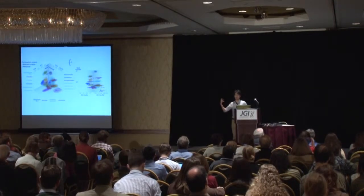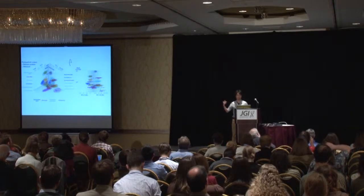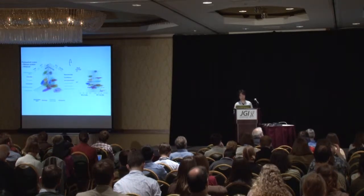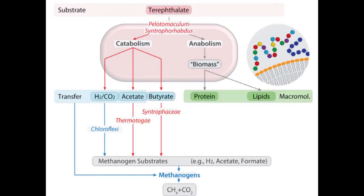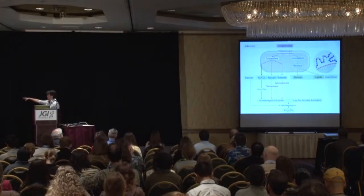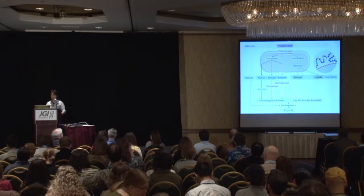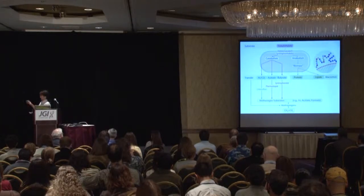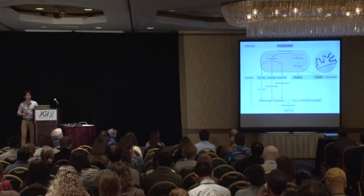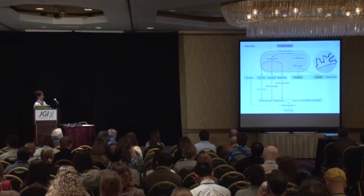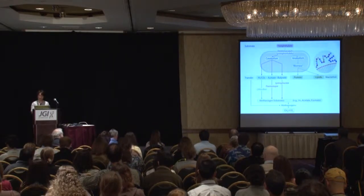We analyzed the draft genomes from binning and single cell genomics to understand what's actually happening inside the terephthalate-degrading reactor. We found that organisms from Chloroflexi, Thermotogae, and Syntrophaceae are helping Pelotomaculum degrade hydrogen, acetate, and butyrate — the byproducts of terephthalate degradation — syntrophically converting those down to methanogen-utilizable substrates. This is something we completely missed in our previous study. This is also the first strong evidence for syntrophs interacting together to accomplish degradation of one substrate — terephthalate — with three to four syntrophs interacting together.